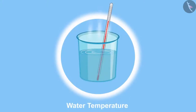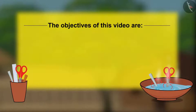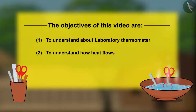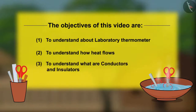I want to know why do hot things become cold and cold things become warm? Let us look for answers to a few such questions through this story. The objectives of this video are: 1. To understand about laboratory thermometer, 2. To understand how heat flows, 3. To understand what are conductors and insulators.